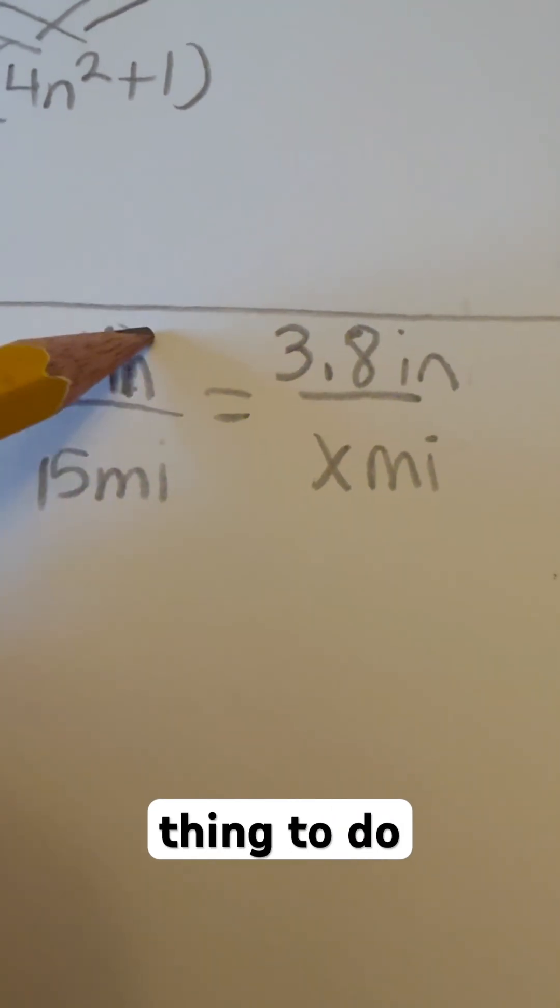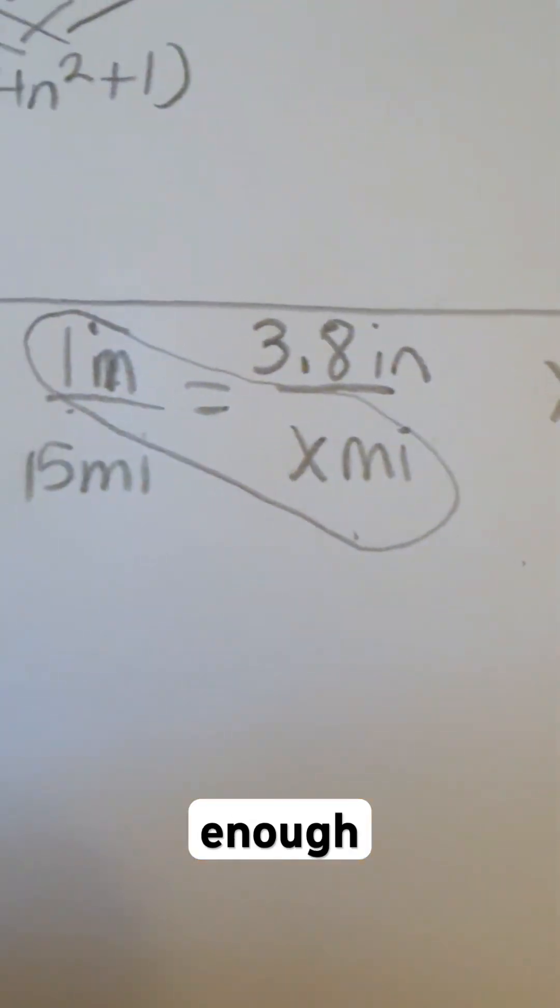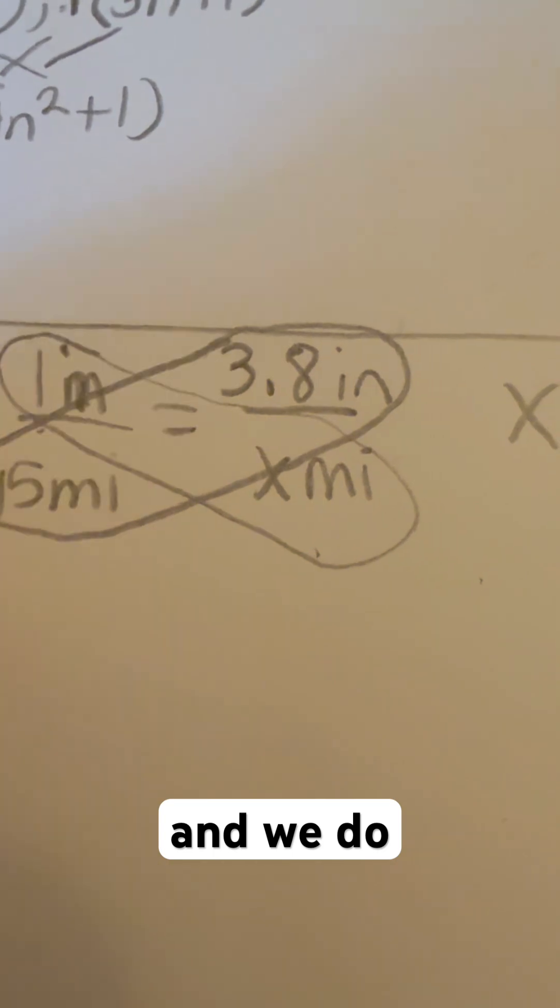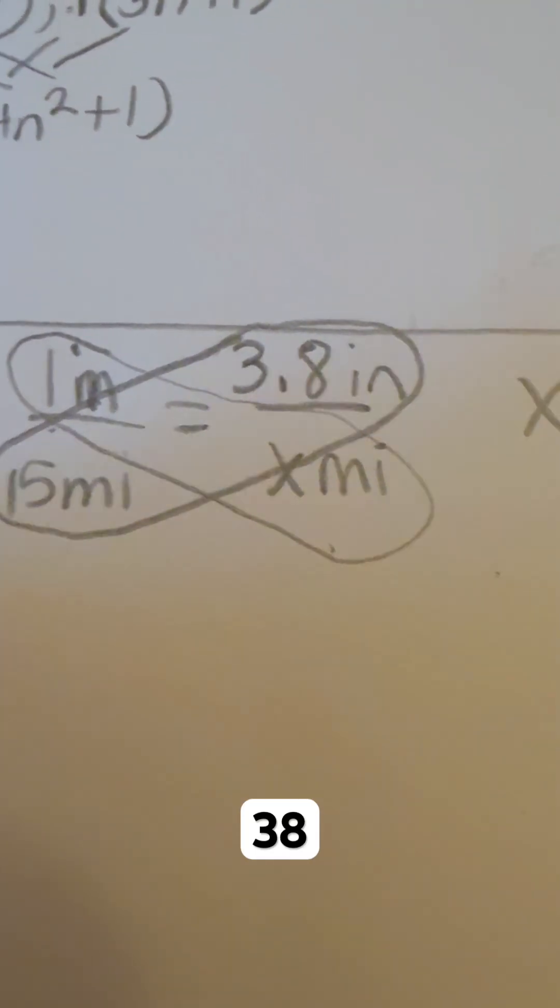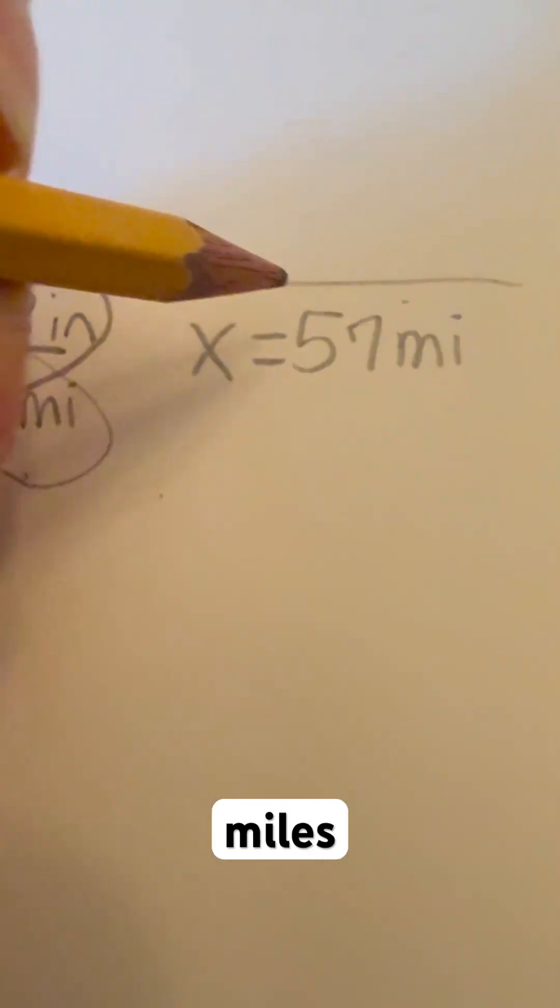Easiest thing to do is to cross multiply. One times x is just going to be x. Simple enough. Then we do our multiplication diagonally this way and we do 15 times 3.8. When I do that you're going to get 57 and that is going to be in miles.